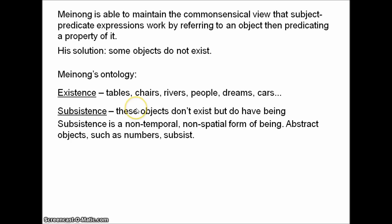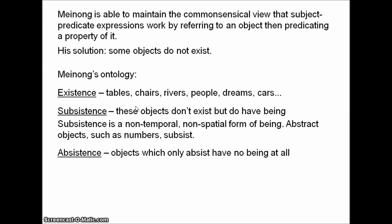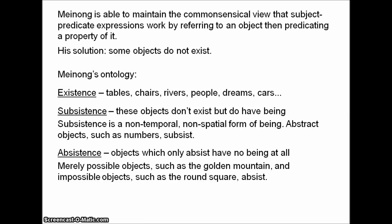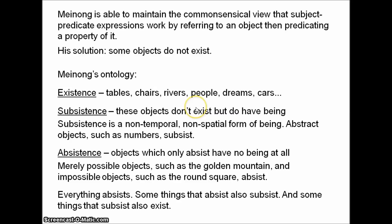Now, the third one — there's a third category, and that's absistence. Objects which only absist have no being at all. This includes merely possible objects such as the golden mountain, and impossible objects such as the round square. These objects only absist. Nevertheless, they do have properties: the golden mountain is gold, and the round square is round. Absistence, it is said, has no negation — everything absists. Some of the things that absist also subsist, and some of the things that subsist also exist.